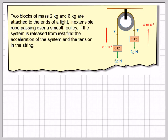Let's explain what this means. Light means that the weight of the rope can be ignored. Inextensible means that the two ends of the string have the same speed and acceleration. Smooth means that the tension will be the same throughout the rope. If the pulley is light, then no force is required to turn it.